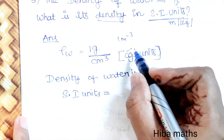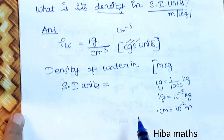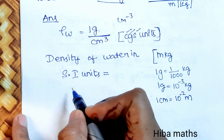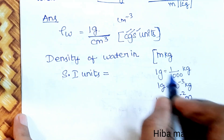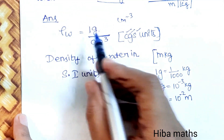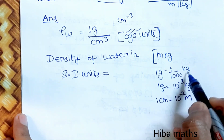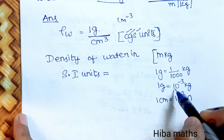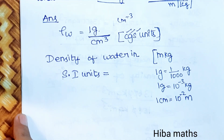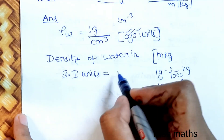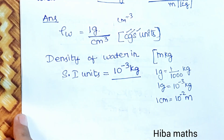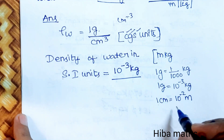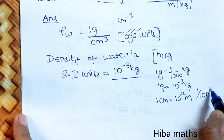To convert: 1 gram = 1/1000 kg = 10⁻³ kg. One centimeter = 1/100 meter = 10⁻² meter. So we have 1 gram per centimeter cube = 10⁻³ kg divided by centimeter cube.